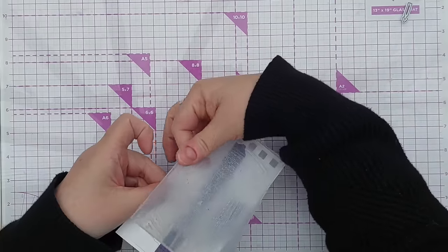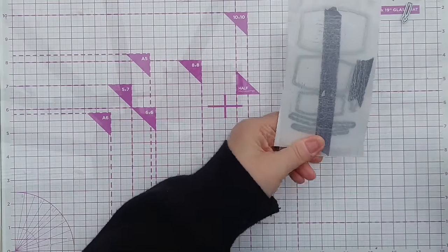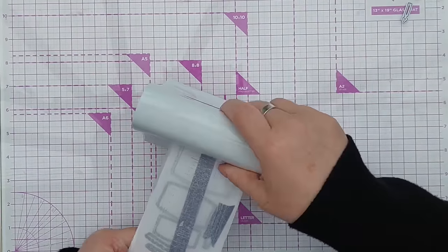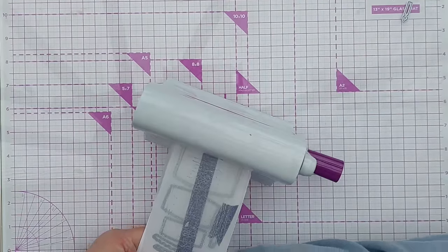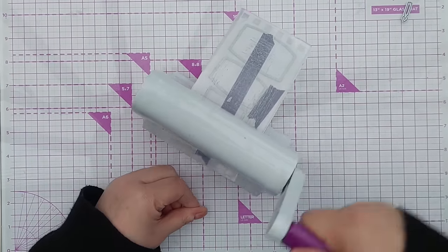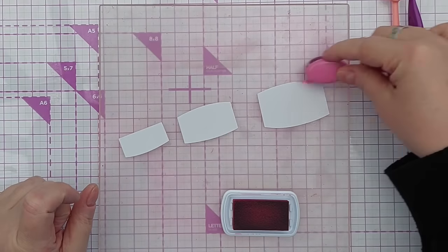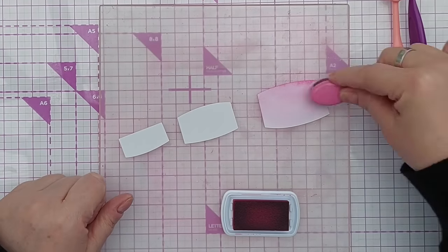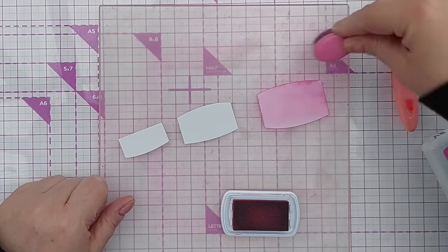The first thing I did was to die cut all my shapes out. This cake element has several pieces to it: three cake layers, three strips of icing, one for each layer, and a candle and a cake stand.